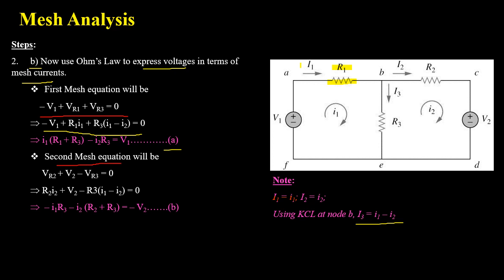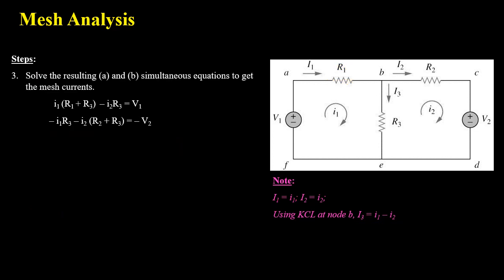For the second mesh equation — VR2 plus V2 minus VR3 equals 0 — using Ohm's law and transforming voltages into the form of mesh currents, and on simplification we get equation B, which is the second equation of mesh analysis. As the third step, we solve the simultaneous equations to get mesh currents. Equations A and B can be solved using Cramer's rule, substitution, or any method you prefer. Once you get the mesh currents, you can find branch currents and voltages across elements such as VR1, VR2, and VR3.